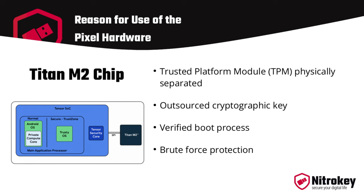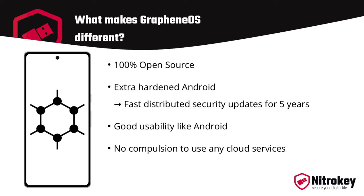The verified boot process ensures the operating system has not been changed and also protects against mass testing of PINs and passwords. GrapheneOS is based on the Android Open Source Project (AOSP) and is 100% open source — transparent and well documented. This applies to the source code itself as well as the system's operation and its functions.